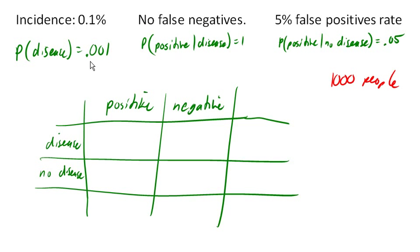then that tells me that out of these 1,000 people, one of them will have the disease, and 999 of them will not have the disease on average.